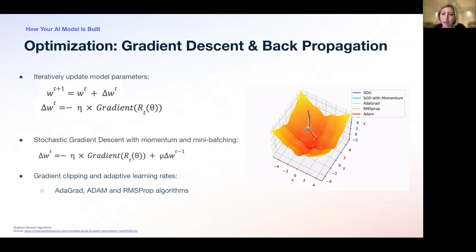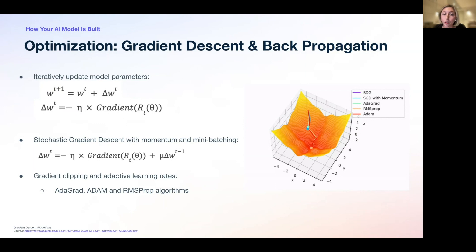Momentum is another technique that helps deal with noisy gradient descent. It avoids situations where we get stuck in flat areas of the function — so-called flat ravines — where parameters don't converge to the minimum. The idea of momentum is to update weights using a combination of current and previous updates, effectively adding inertia to parameter updates. It's powerful, but introduces another hyperparameter (denoted μ) for the researcher to tune. Gradient clipping is a similar technique that puts constraints on the size of gradient steps to avoid jumping into saddle points of the loss function.